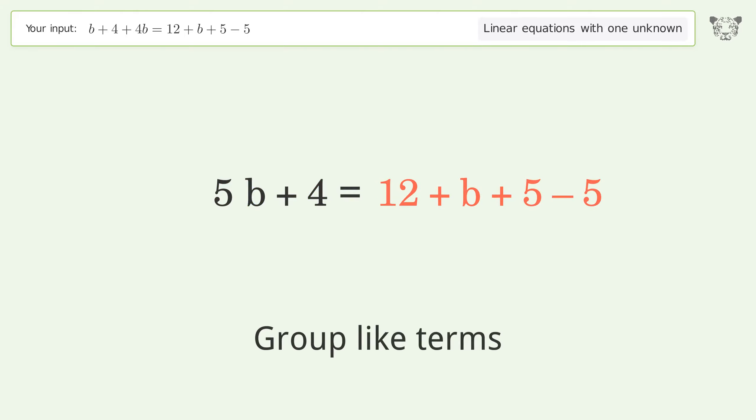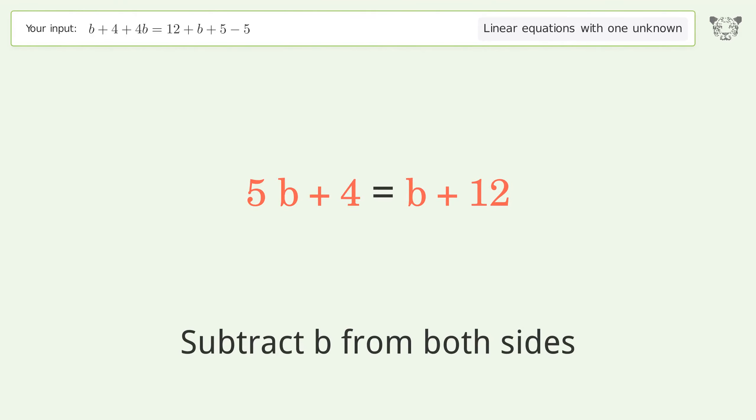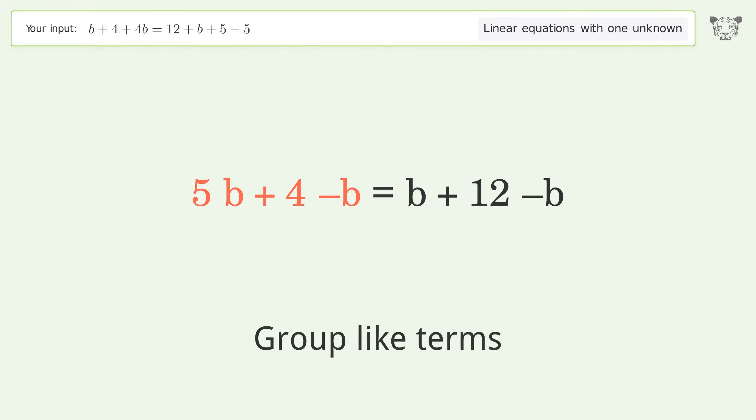Group like terms, simplify the arithmetic. Group all b terms on the left side of the equation. Subtract b from both sides, then group like terms and simplify.